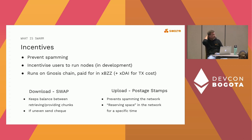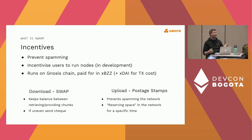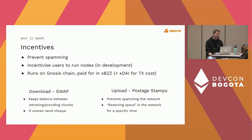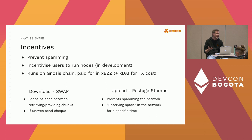There are two kinds of incentives: bandwidth incentives, which is money you can earn for sharing data on the network, and storage incentives, which is how you earn by storing data for other people. These two things are separate. Currently, only the bandwidth incentives are running on mainnet. You cannot yet earn money by storing data for other people — this is something we're working on and testing on testnet, planning to roll it out soon.